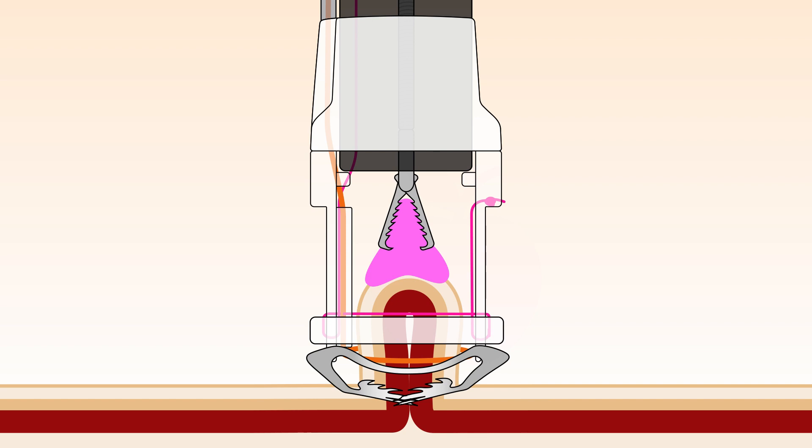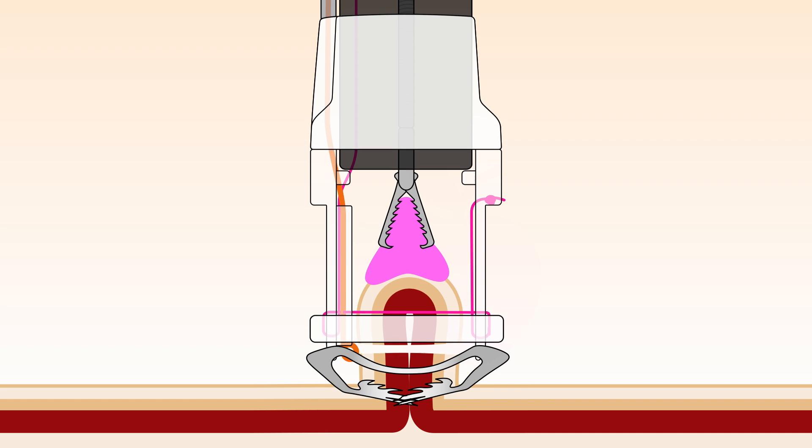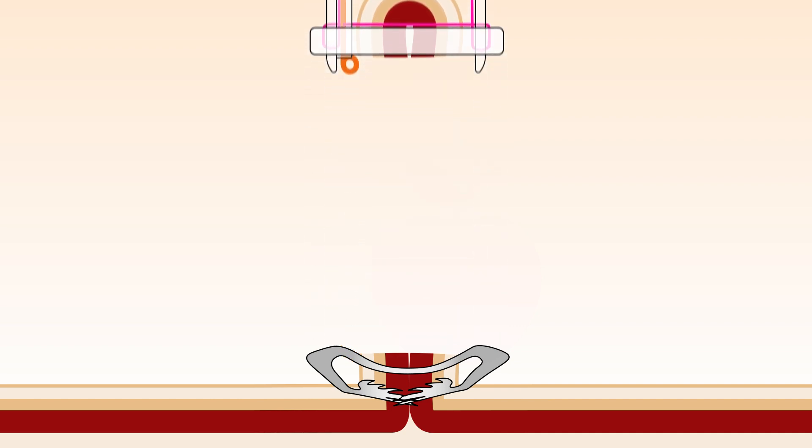The finding drawn into the cap is cut off above the clip using an integrated snare and then retrieved from the body with the entire instrument.